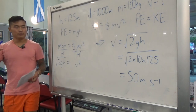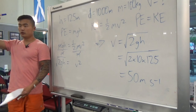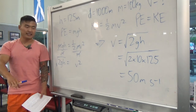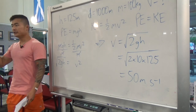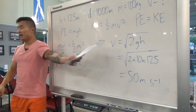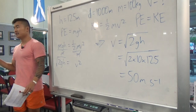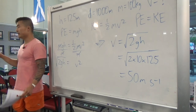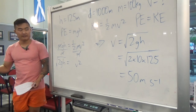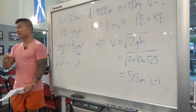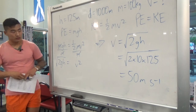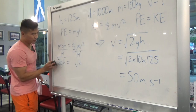If an object falls from a height with potential energy converting to kinetic energy and no friction, you can simply use v equals the square root of 2gh — all you need is the height. Mass doesn't matter; whether it's a heavy or light object, it will always have the same velocity when it hits the ground.